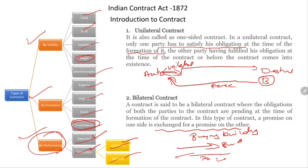E-contracts are modern-day contracts where everything happens on an e-commerce platform — for example, when you order something on Amazon and sign terms and conditions online. Anything happening on an e-commerce platform is called an e-contract. That covers all types of contract. In the next video, we will discuss offer and acceptance.